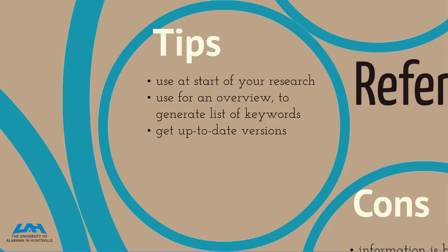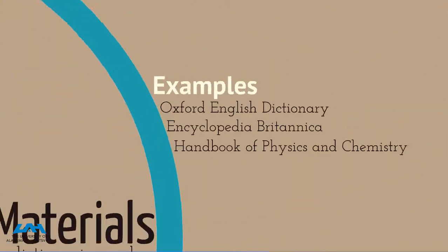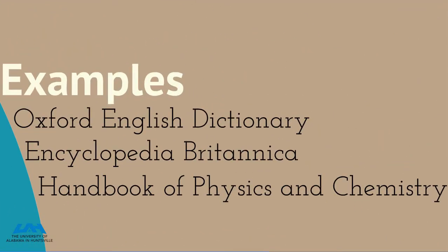Maybe check a couple to make sure they have the same information and make sure you're using the up-to-date ones — this helps guarantee you're getting the best information. Some examples include the Oxford English Dictionary, the Encyclopedia Britannica, and the Handbook of Physics and Chemistry.